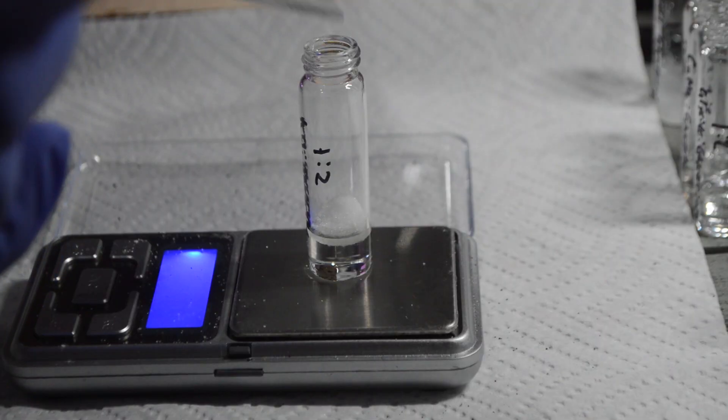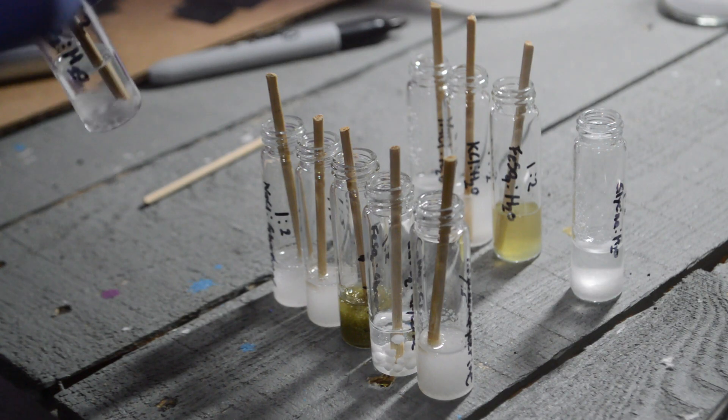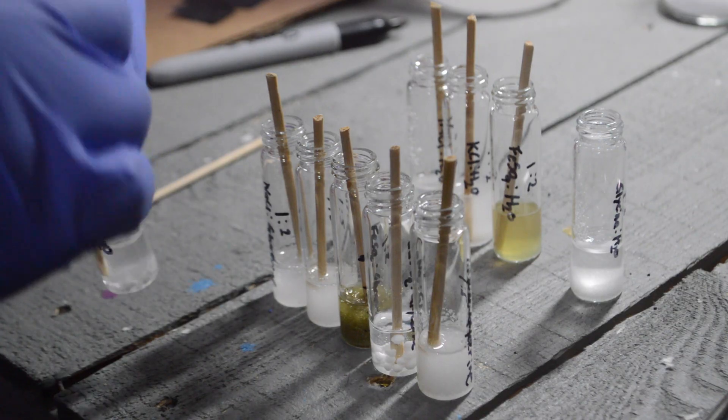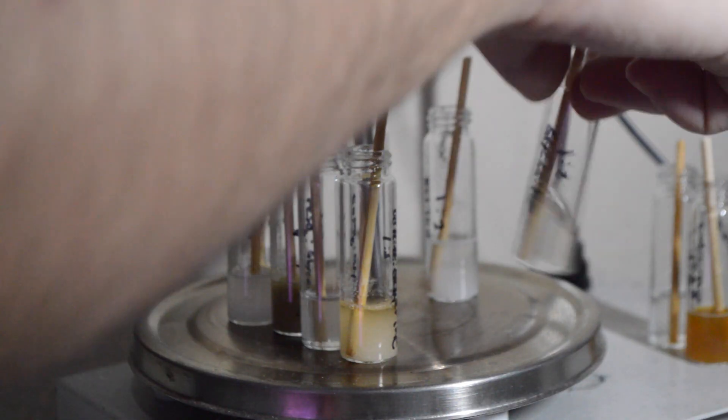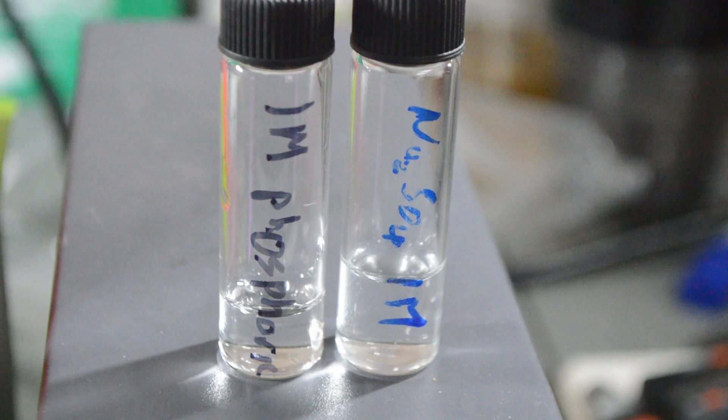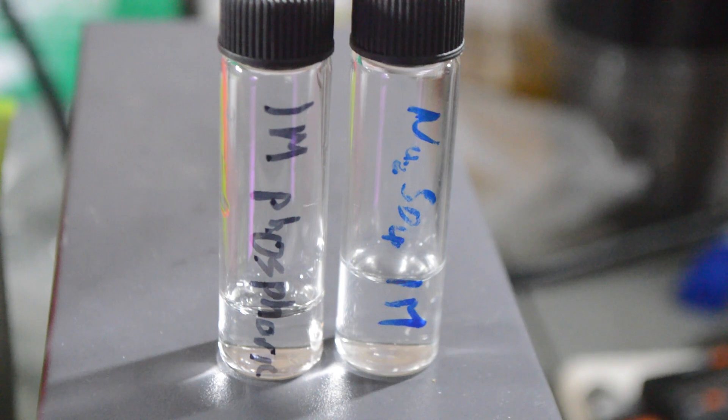Finally, we need an electrolyte. By far the most common is 1 molar sulfuric acid, as it provides a lot of hydrogen ions to participate in the electrostatic reactions. But you can use neutral or even basic electrolytes. Here let's compare 1 molar phosphoric acid and 1 molar sodium sulfate.